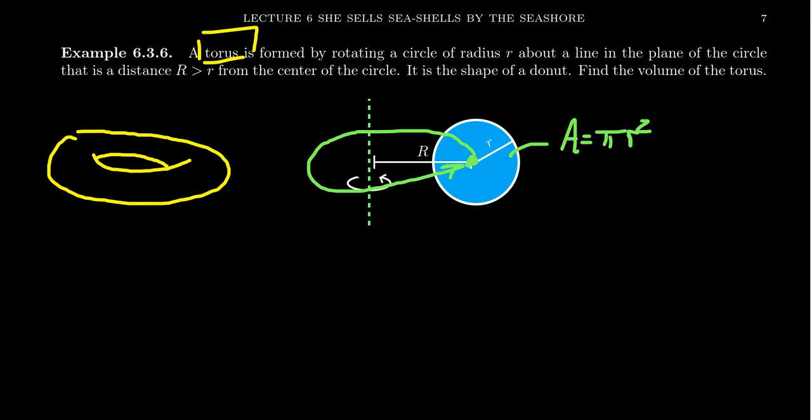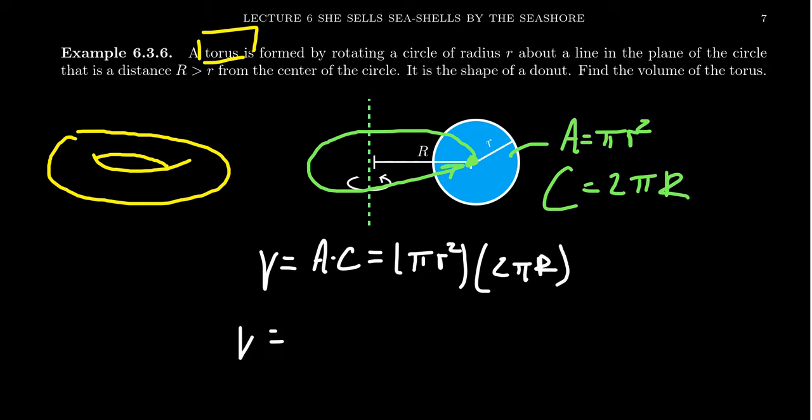Well, it travels along the circular path, the radius of which is capital R. So the circumference is going to equal 2 pi capital R, the circumference of that green circle drawn right there. And so the theorem of Pappas tells us that the area times this circumference is the volume. So we get pi little r squared times 2 pi capital R. And so the volume of a donut equals 2 pi squared little r squared capital R. And that's all there is to it.